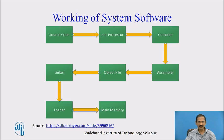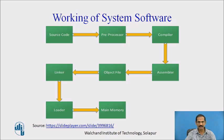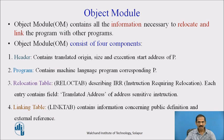We once again revisit the working of the system software where a source code is given to a file processor and then to a compiler or assembler to produce the object file, which is given as input to the linker. The loader loads the binary program produced by the linker into the main memory for execution. This object module contains all the information necessary to relocate and link the program with other programs.